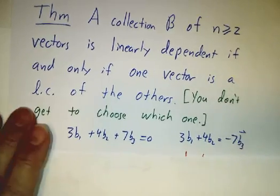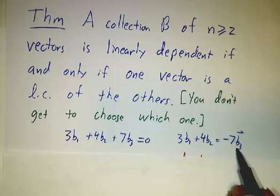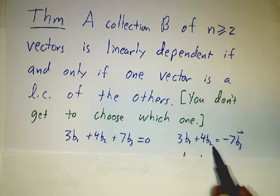And then you could divide by negative 7 and you've got b₃ as a combination of b₁ and b₂.